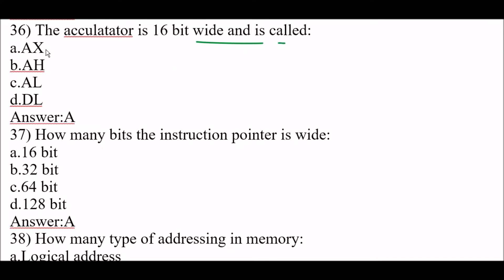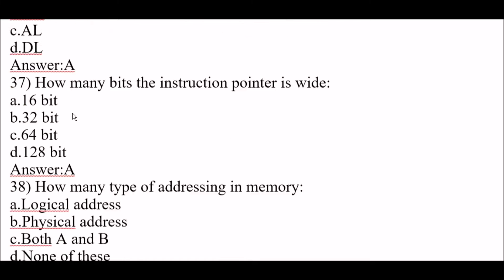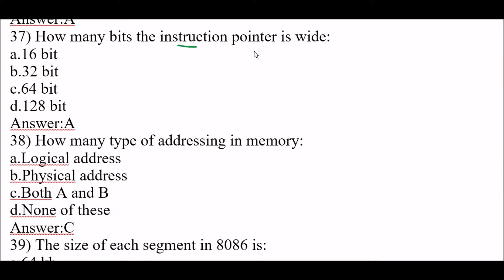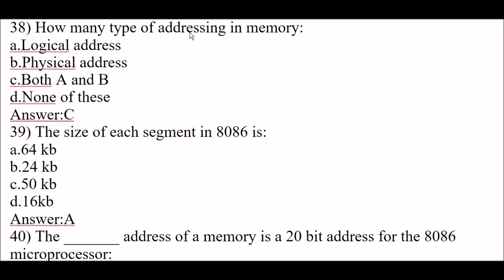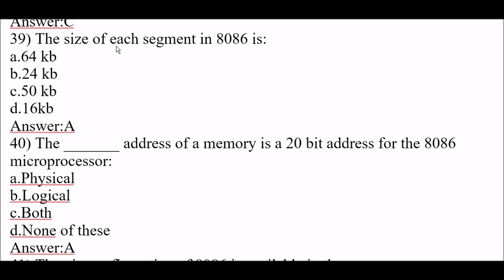Next question: the accumulator is 16 bits wide and is called AX. Next question: how many bits wide is the instruction pointer? 16 bits — the instruction pointer is 16 bits wide. Next question: how many types of addressing are in memory? Two types — logical address and physical address. The right answer is option C, both A and B.